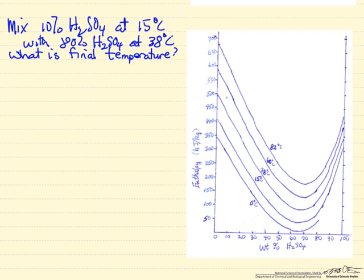We'll do one more problem, and this is one you might first try on your own. We want to mix 10% weight percent sulfuric acid at 15 degrees with a mixture of 80% sulfuric acid at 38 degrees, and the question is what's the final temperature? There's one more piece of information we need, and that's what is our final composition.